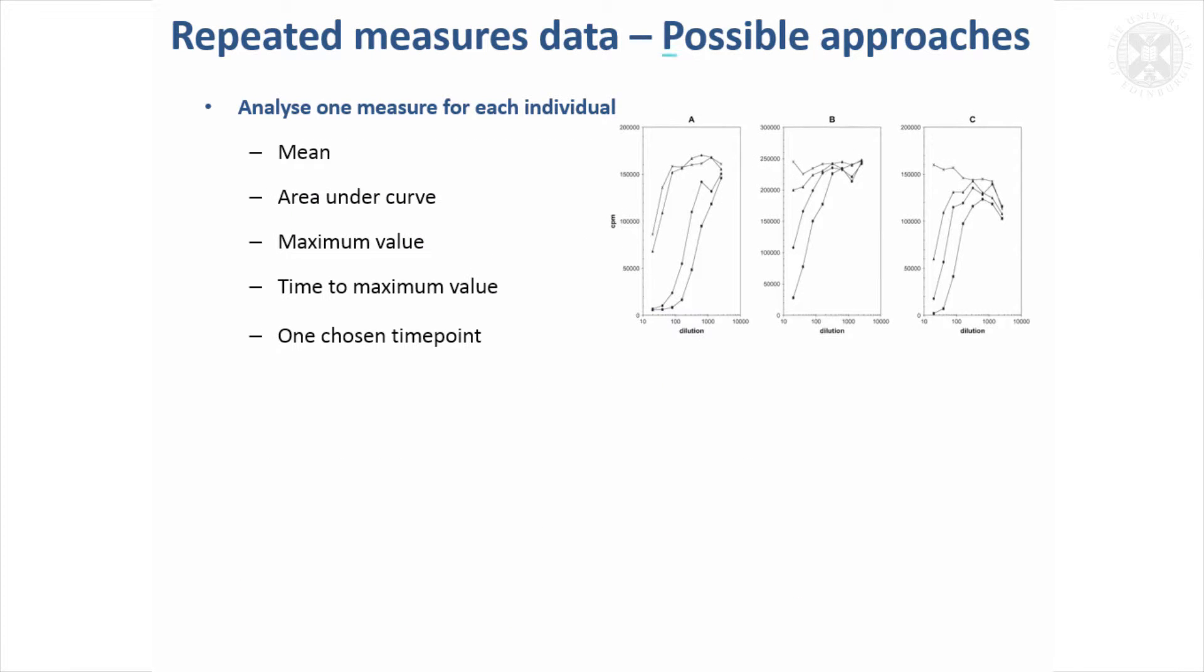What are the possible approaches that you might use? One thing that you could do, but it's not ideal, is you might get a summary statistic for the data. You might take the average over the whole range of values for each of the individuals, or you might consider the area under the curve, the maximum value, the time it takes to get to the maximum value, or you might analyze the data at a particular time point.